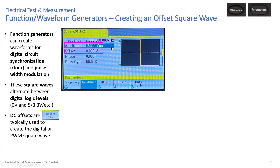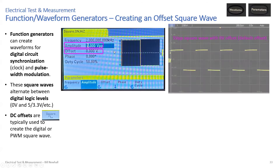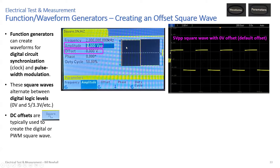Here's an example: with a 5-volt peak-to-peak amplitude and 0-volt offset — usually what you see when you power up the function generator — you'd measure a square wave going from negative 2.5 volts to positive 2.5 volts. That's 5 volts peak-to-peak with a 0-volt offset. If you just enter 5 volts and expect a digitally compatible signal, that's not what you want, because it swings negative.